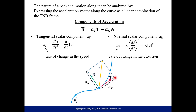Similarly, a_N is a multiple of N — just a scaled version of that vector. When we add those together we get our acceleration vector. This is a more meaningful way to break down acceleration: N points in the direction we're turning and T points in the direction we're heading on our curve.